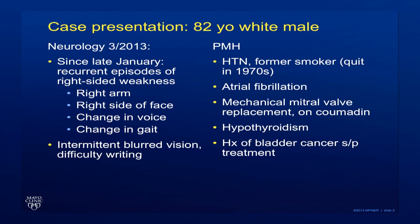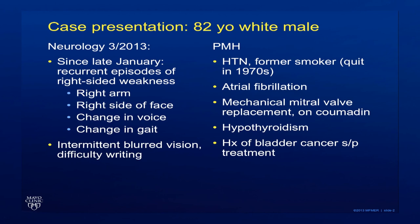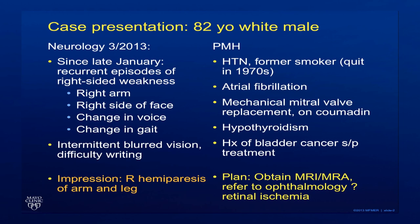He had a history of hypertension. He had been a smoker. He also had atrial fibrillation and mitral valve replacement, hypothyroidism, and a history of bladder cancer which had been treated. Neurology planned to obtain an MRI and an MRA, and referred to ophthalmology to rule out retinal ischemia.